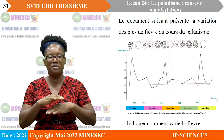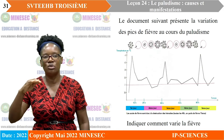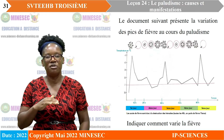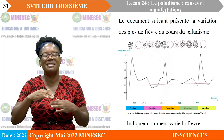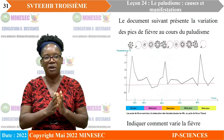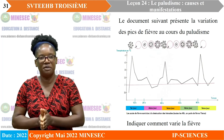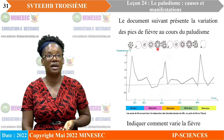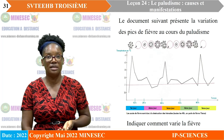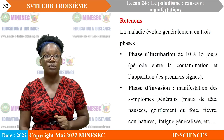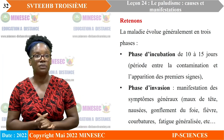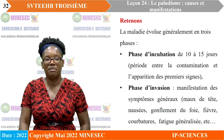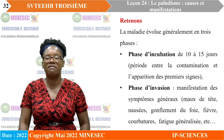La fièvre paludique est une fièvre dite intermittente : il y a des pics de fièvre et des périodes où la fièvre a glissé. Ces différents pics correspondent à la destruction de nombreuses hématies. Lors du paludisme, la maladie évolue généralement en trois phases. Nous avons la phase d'incubation, qui dure de 10 à 15 jours.